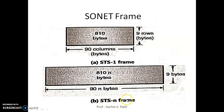The STS-n frame format has 9 rows and 90 columns — multiply by the n value. For an STS-3 frame, take 90 multiplied by 3. For STS-1, 90 multiplied by 1. For STS-5, 90 multiplied by 5. That many columns we are getting.